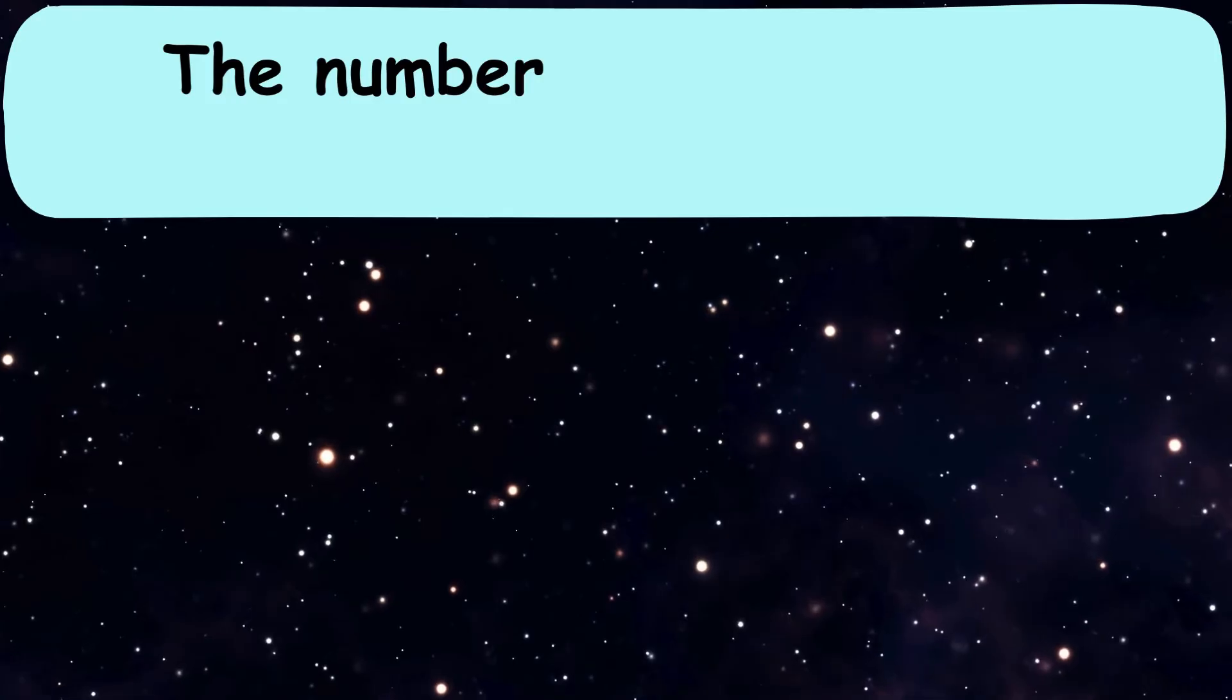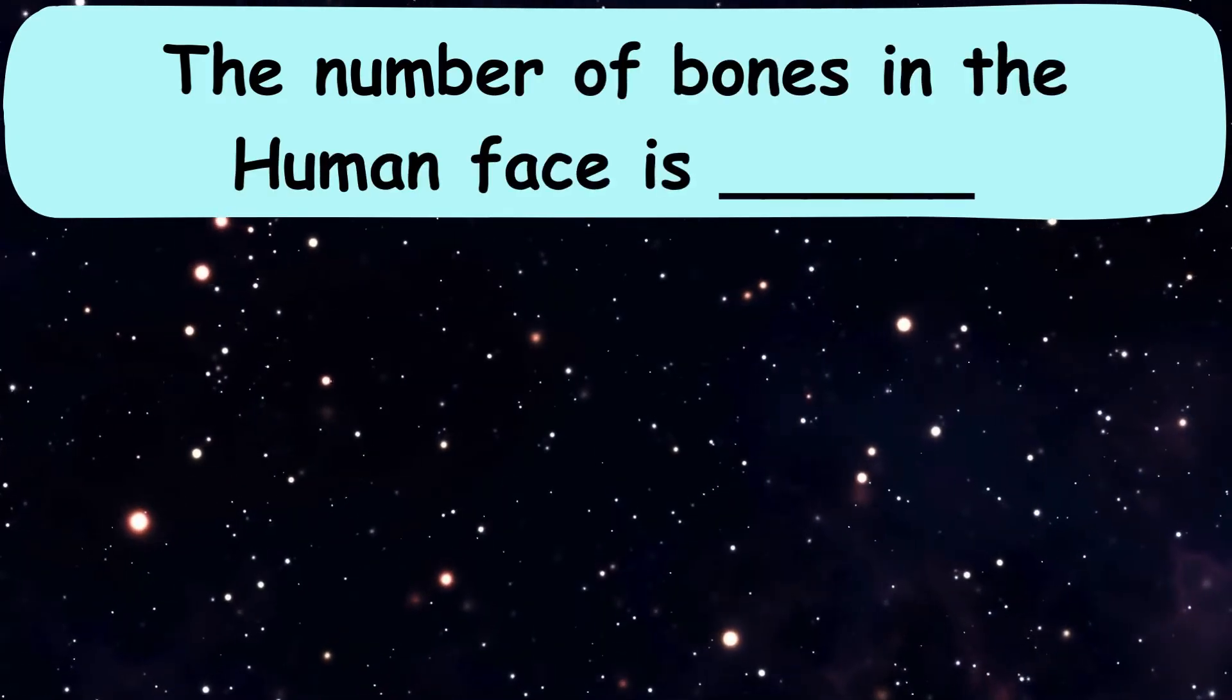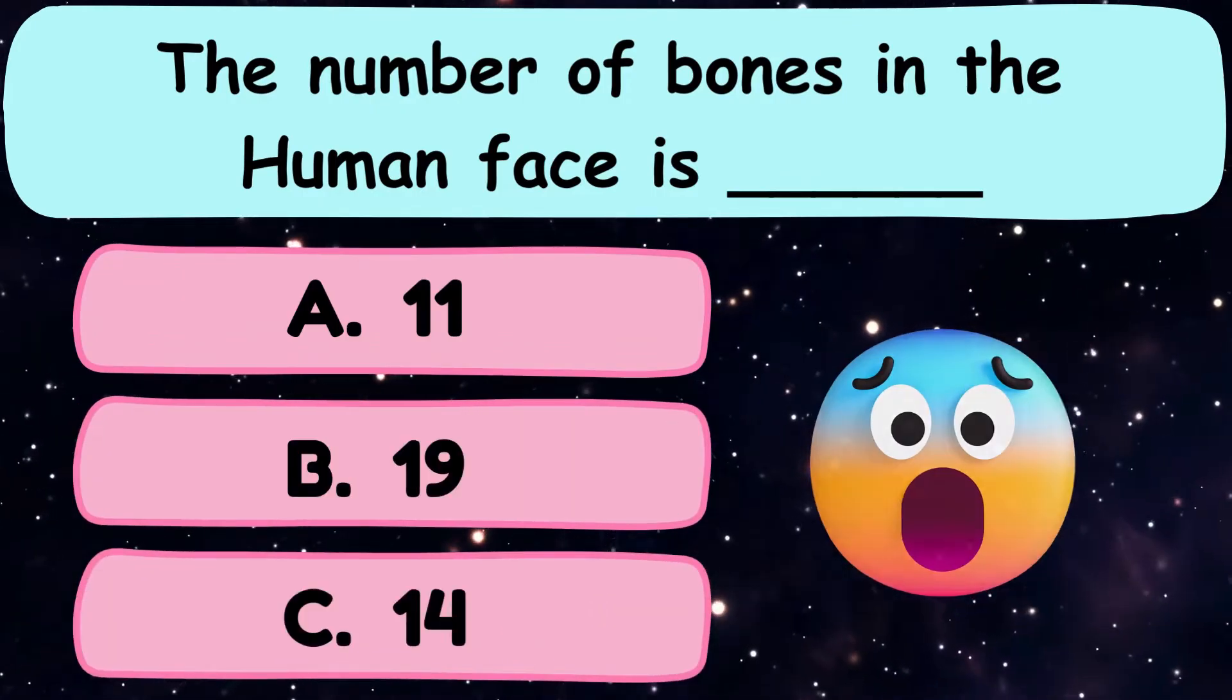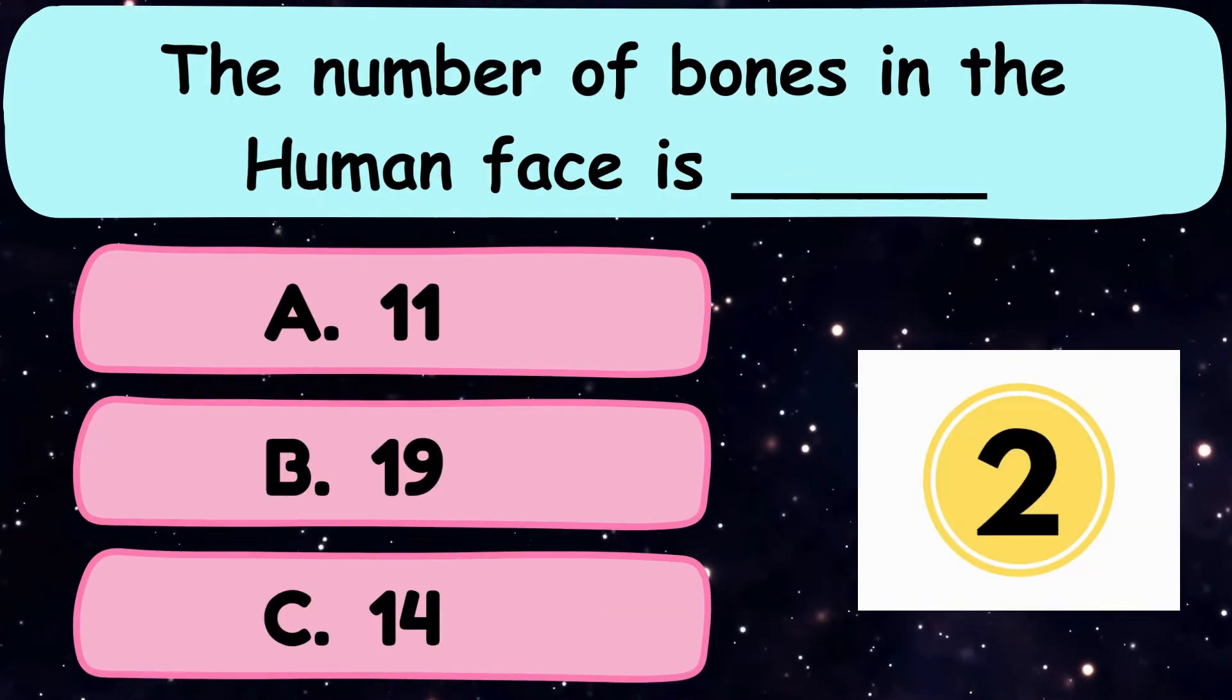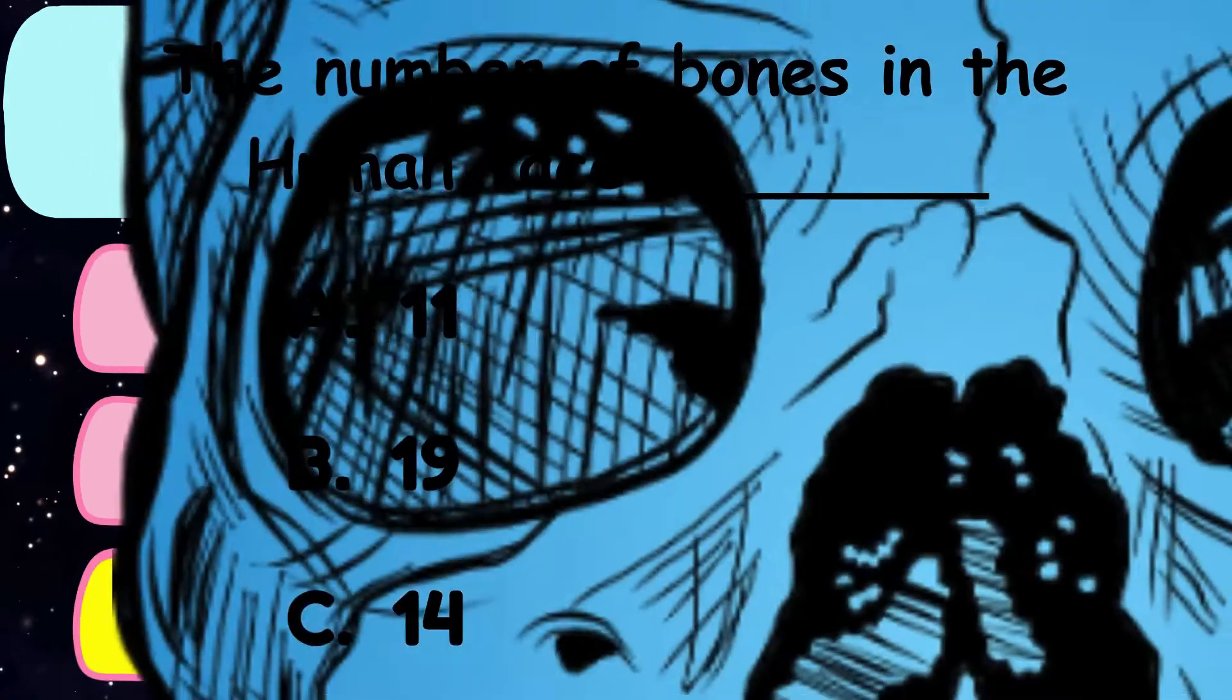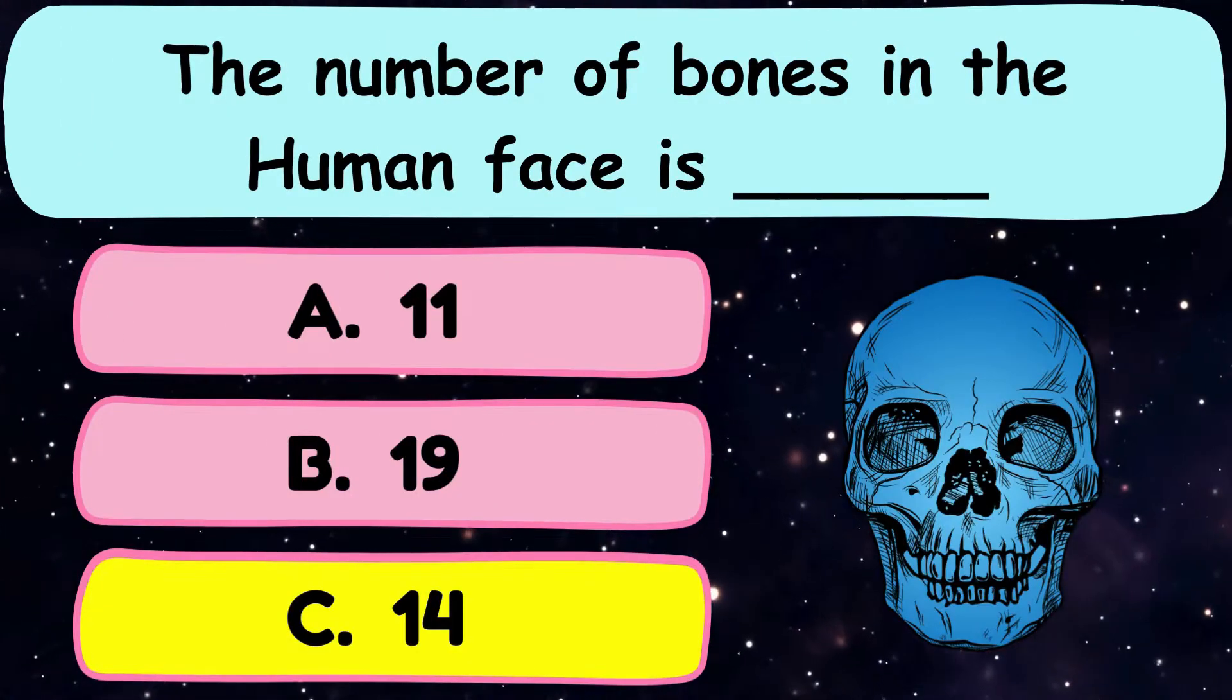Question number 3. The number of bones in the human face is dash. A. 11, B. 19, or C. 14. And the correct answer is option C. 14 bones.